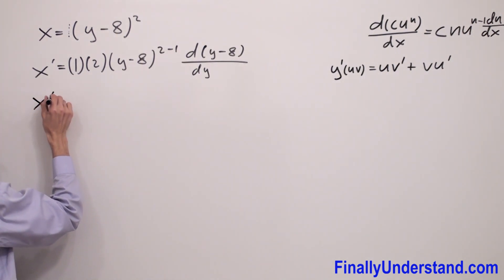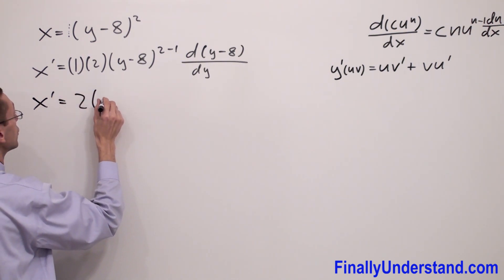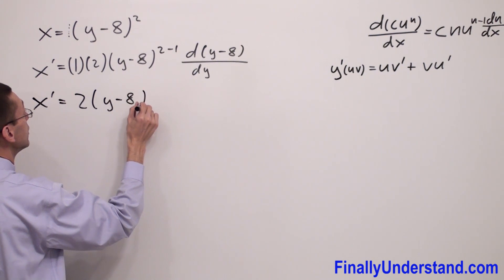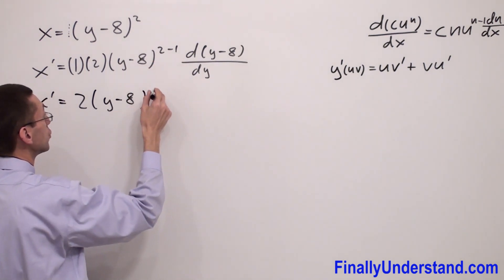So x' is equal to 2 times (y minus 8) to the first power. I'm not going to write it.